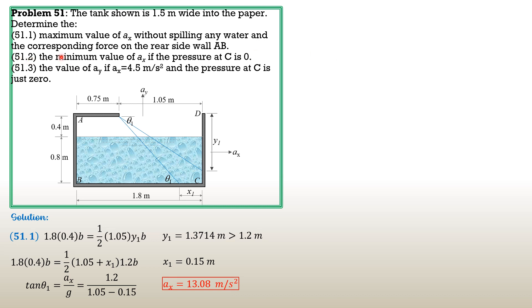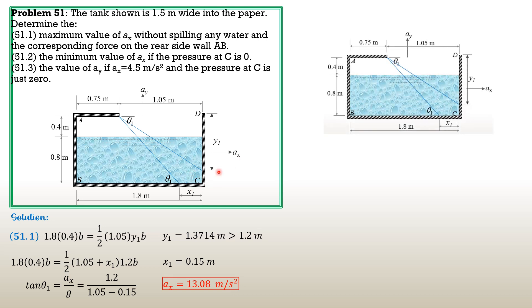For the second part — the minimum value of ax if the pressure at C is zero — in the first configuration pressure at C is already zero because the bottom portion is exposed, but that is not the situation for minimum ax. The minimum ax occurs when the water surface crosses exactly through point C, with the surface extending as shown in the figure, satisfying the condition that pressure at C is zero.